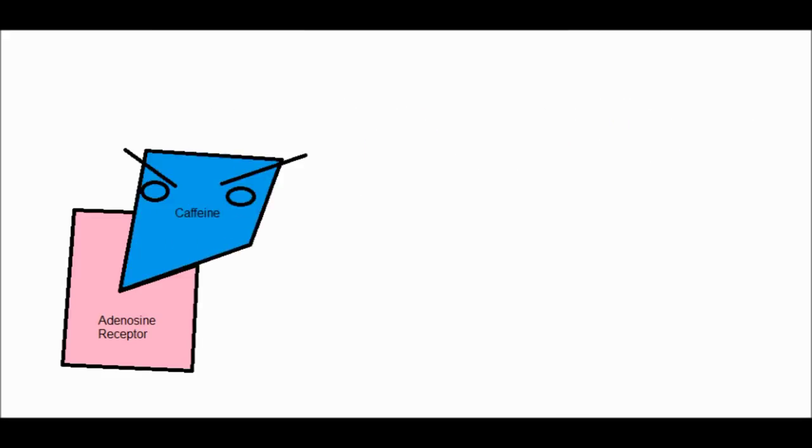When caffeine blocks the receptors, no signals are sent for you to sleep. It's important to mention that there are also a few other ways caffeine can affect your body, but these happen at high levels of intake which aren't actually achievable by normal daily consumption. Basically, to sum it all up: caffeine keeps you awake by quickly absorbing into your body, blocking your adenosine receptors, and halting your response for sleep — all thanks to the shared purine ring structure of caffeine and adenosine.